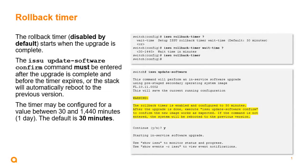The rollback timer, which is disabled by default, starts when the upgrade is complete. The ISSU update software confirm command must be entered after the upgrade is complete and before the timer expires, or the stack will automatically reboot to the previous version. The rollback timer may be configured for a value between 30 and 1,440 minutes, or one day. The default value is 30 minutes.